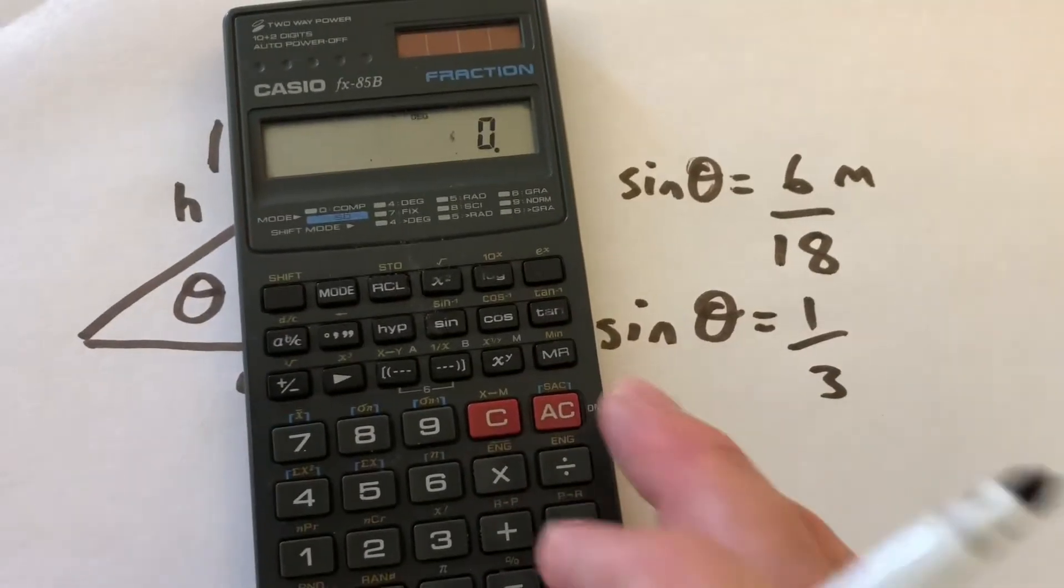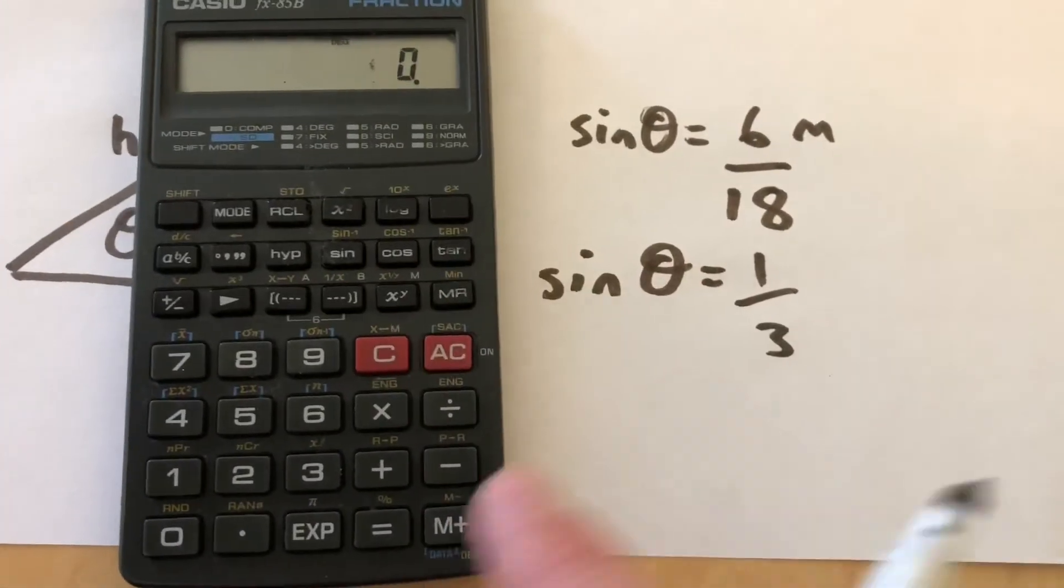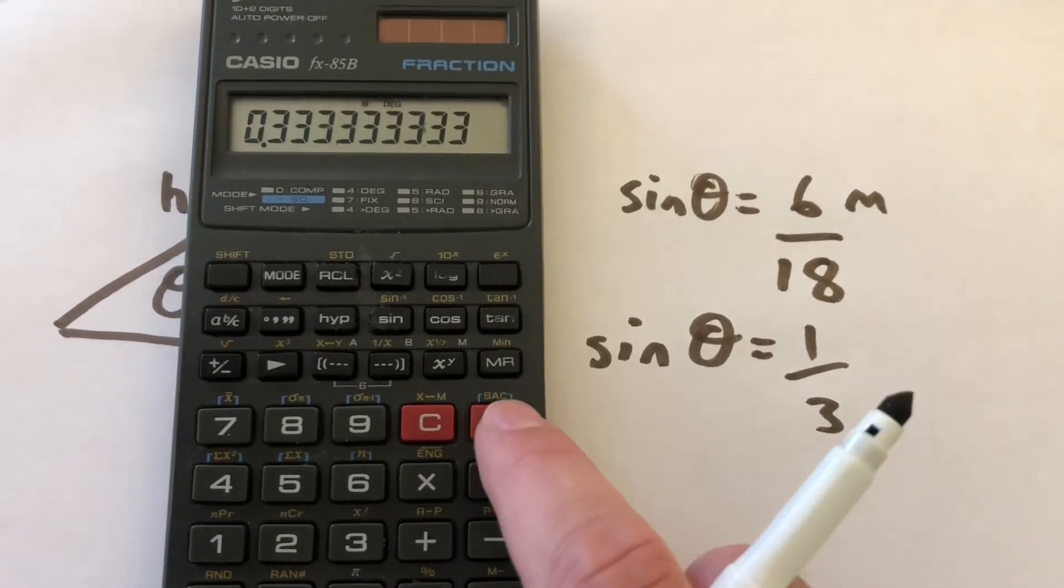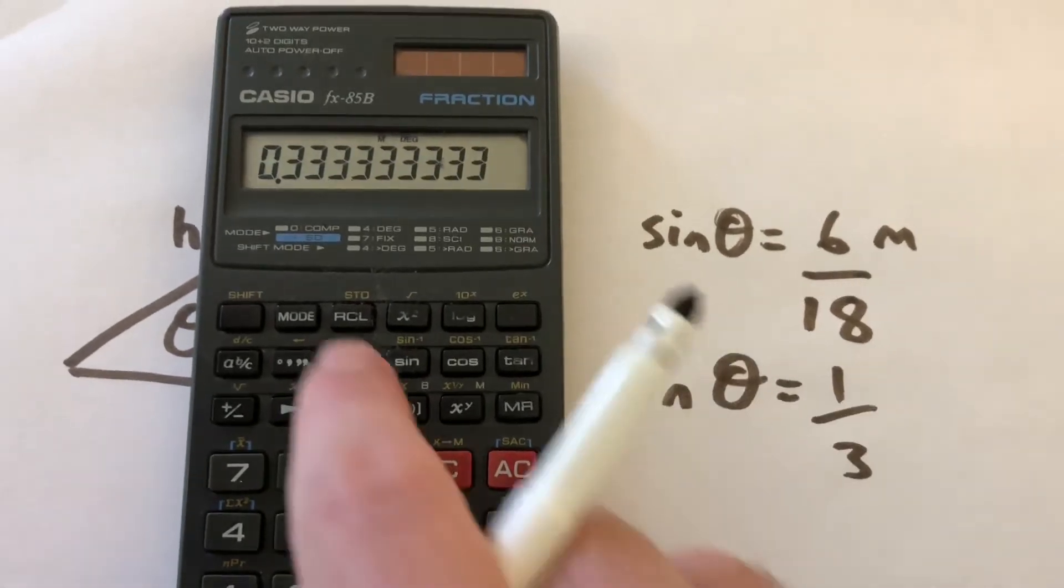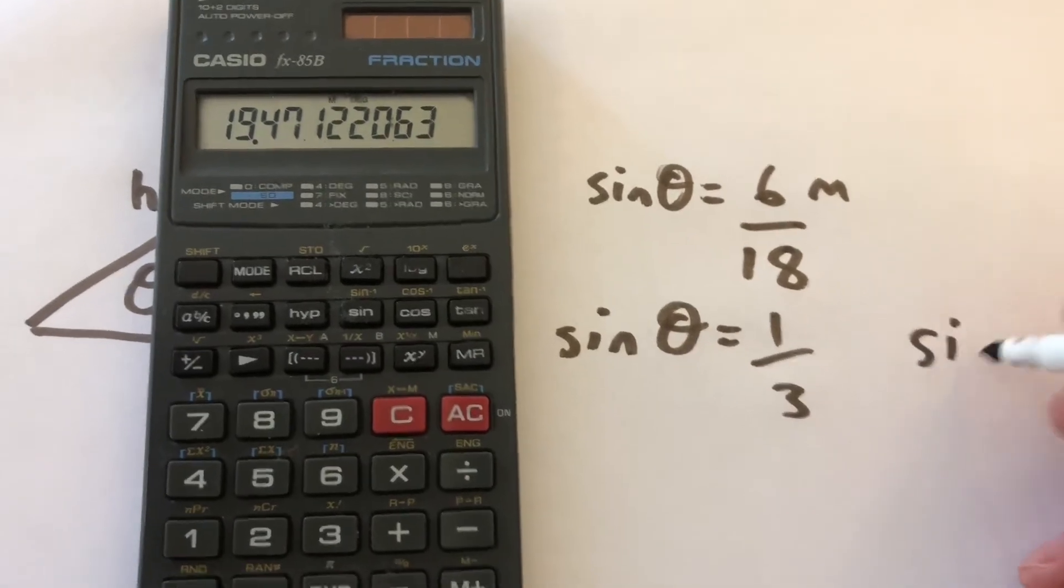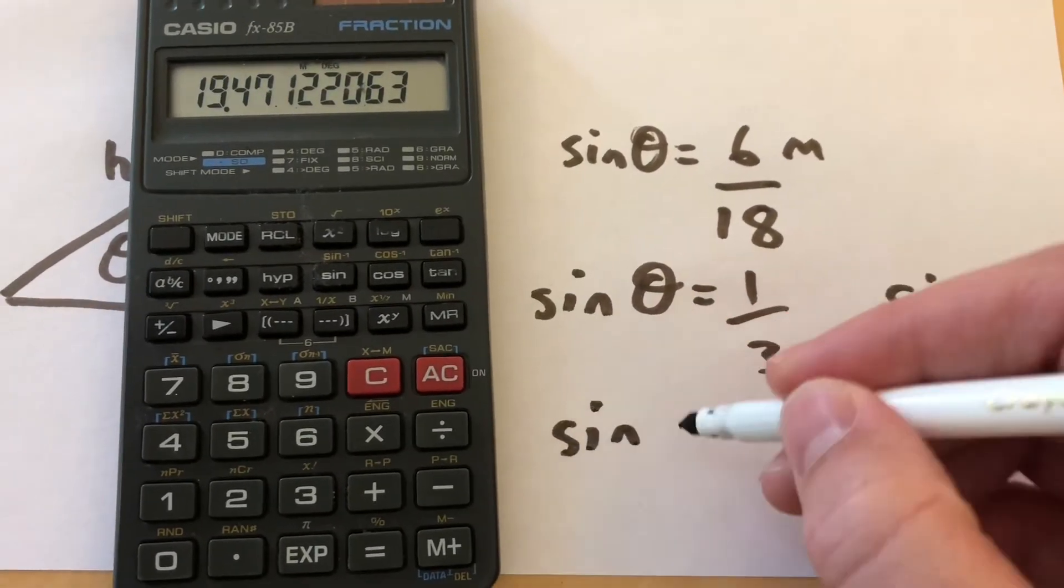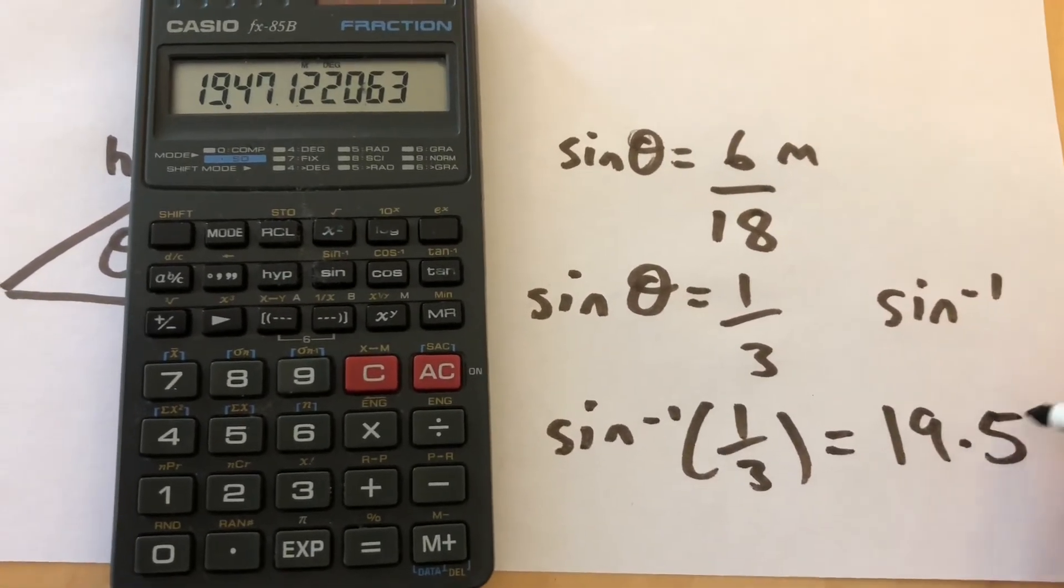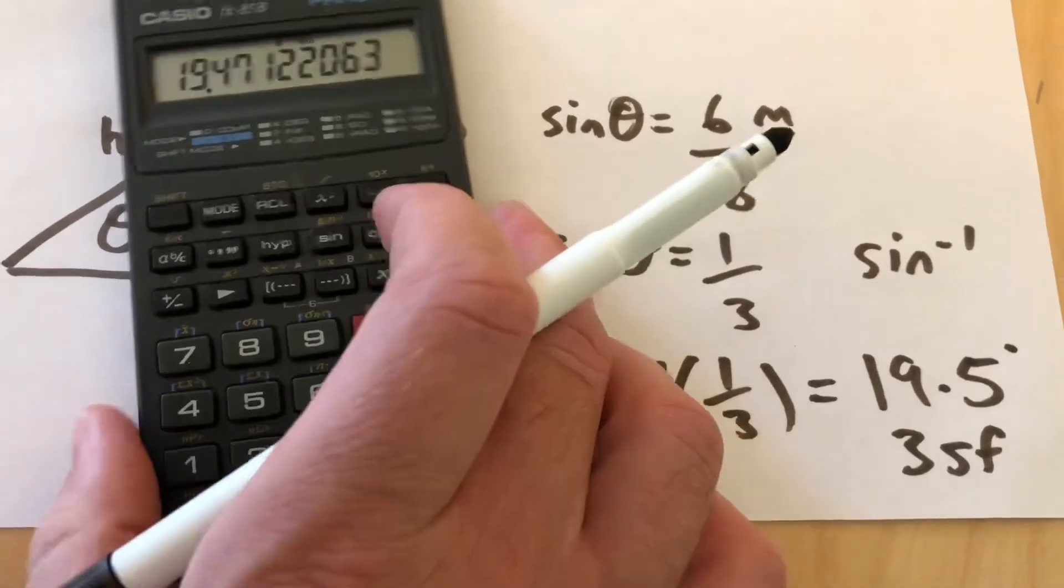So again, using a calculator. This time you need to do shift sine. Because it's an old calculator, I'll have to work that out first. 6 divided by 18. Right, sorry, 6 divided by 18, and then do shift, the second function of sine. So I'm doing sine inverse. Do shift sine of one third. And I get 19.2 to 3 significant figures, the standard unit of rounding.